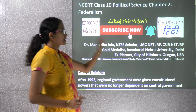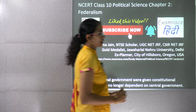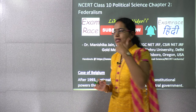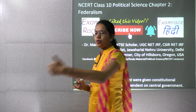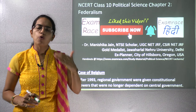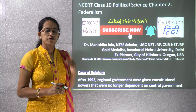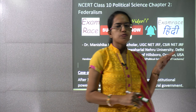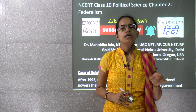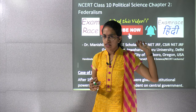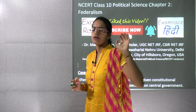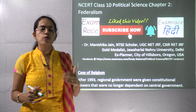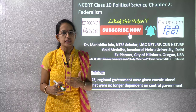Welcome. We'll start with the second chapter for political science where we would talk about federalism. In the last chapter, we talked about four different types of power sharing: the horizontal distribution of power, the federal structure of government, the community government, and the coalition government.